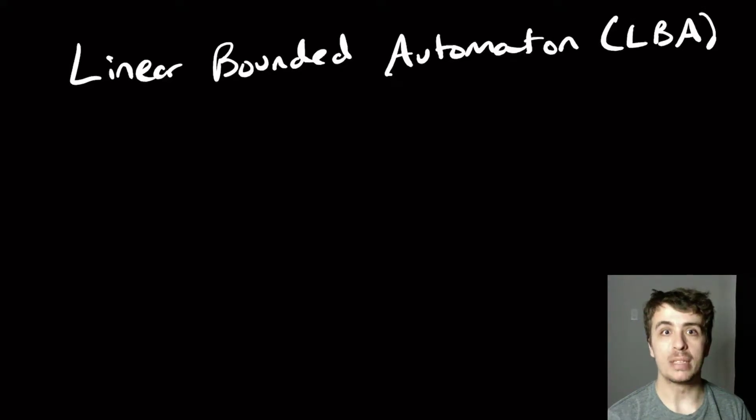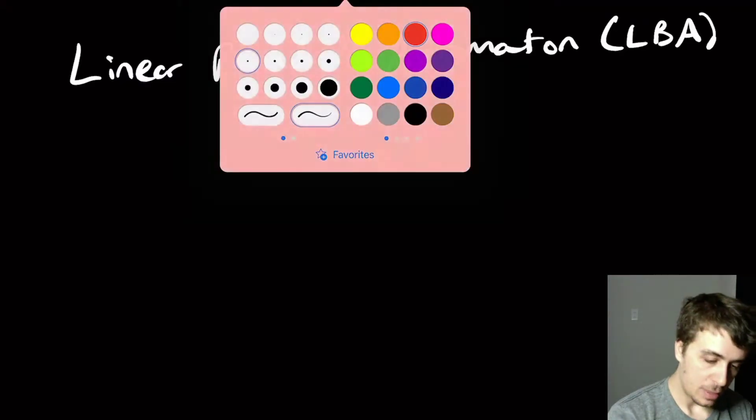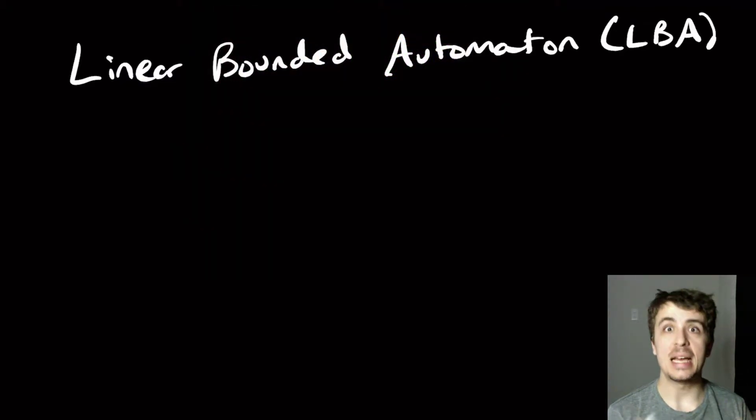Today we're going to give a quick definition of what a linear bounded automaton is. The basic idea is that it is really a Turing machine that has bounded space in terms of what it can access on the tape.